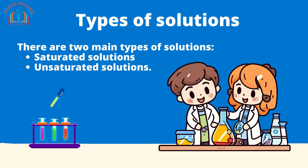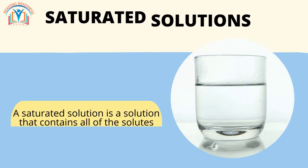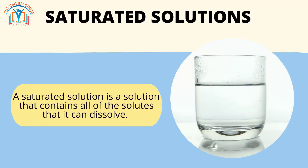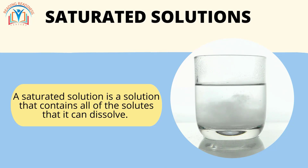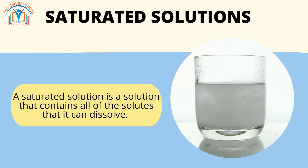Types of solutions. There are two main types of solutions: saturated solutions and unsaturated solutions. A saturated solution is a solution that contains all of the solute that it can dissolve. For example, if you mix sugar and water until you can't dissolve any more sugar, you have created a saturated solution of sugar water.